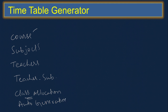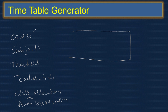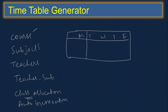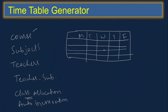How do we do this auto generation? In the timetable, let's say there are five classes and there are weekdays — Monday, Tuesday, Wednesday, Thursday, Friday — and assume four hours per day and totally five subjects.